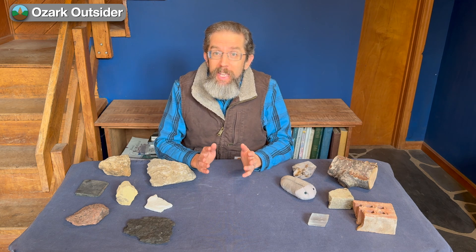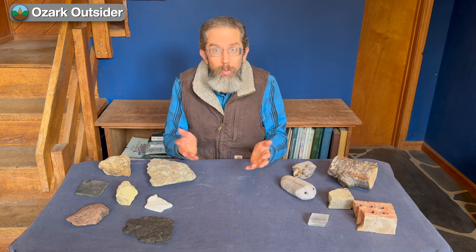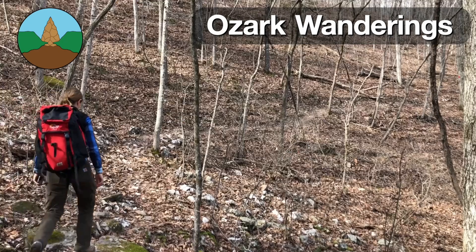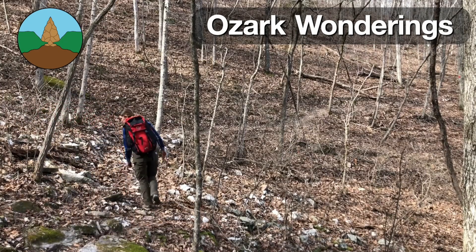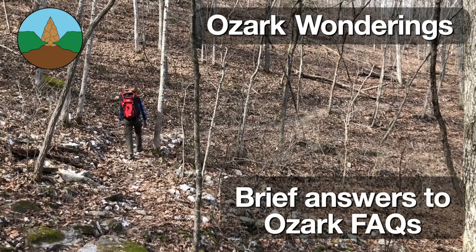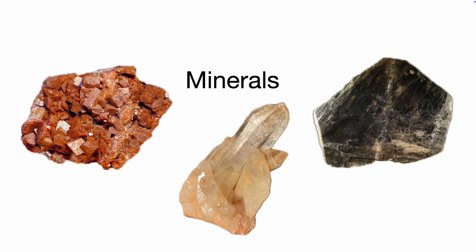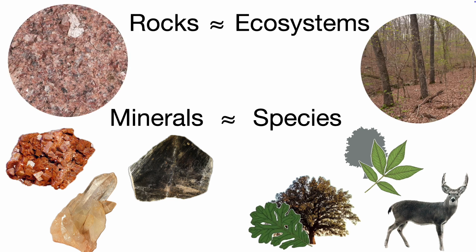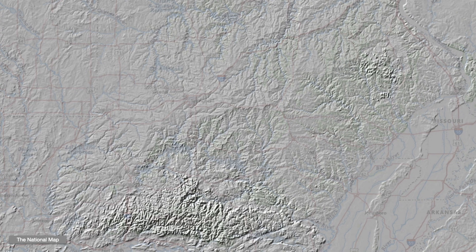In fact, biology provides an interesting way to think about this deceptively simple question of what is a rock, and we're going to explore that today by comparing rocks to ecosystems. Welcome to another episode of Ozark Wonderings, our series of short FAQ-style videos giving brief answers to interesting questions about Ozark geology and more. In our previous video, we made the case that geological minerals are loosely analogous to biological species — both represent the basic unit for classifying biological organisms or geological specimens. Now we're going to extend that idea by suggesting that rocks are analogous to ecosystems, considering some examples relevant to our home region, the Ozarks, and also some rocks you might find there.